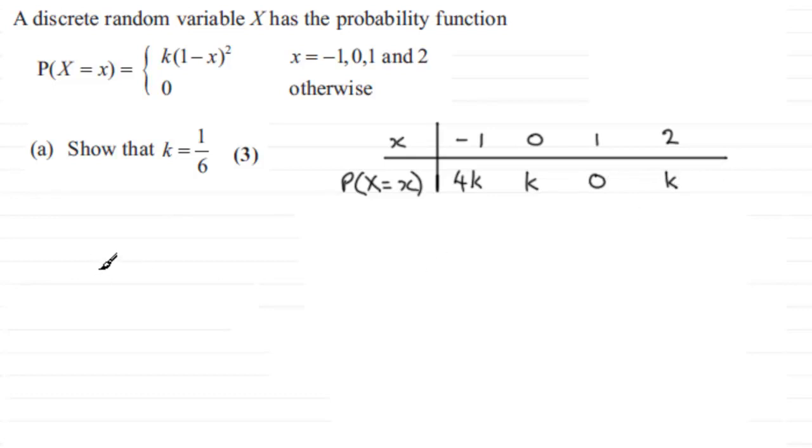So in other words, we know that 4k plus k plus the zero plus the k should come to one whole one. In which case we've got 6k equals one, and that means that therefore k equals one sixth.